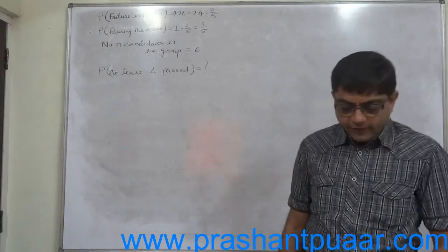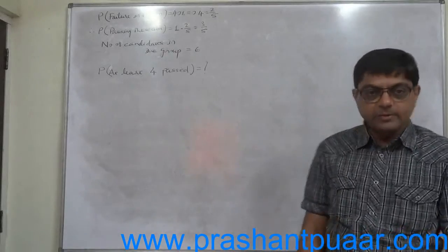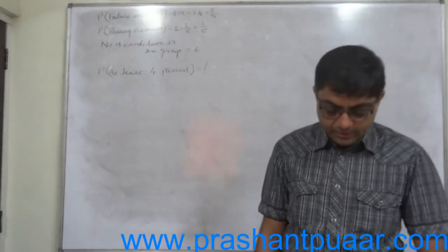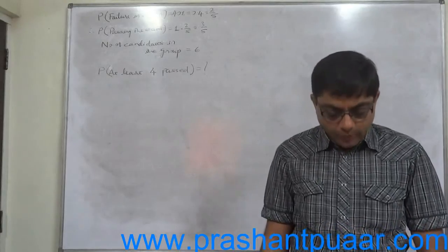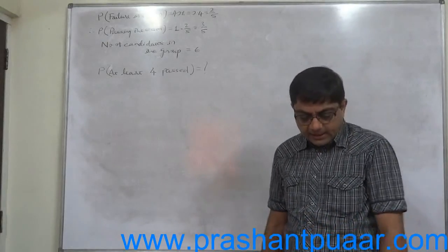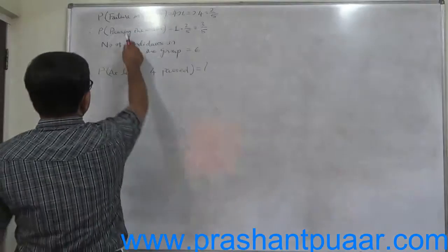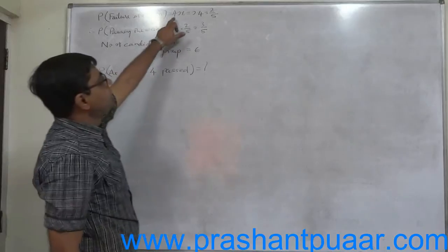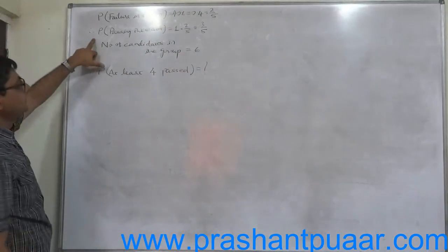The average percentage of failures in a certain exam is 40%. That means 40% of candidates fail in the examination. What is the probability that in a group of six candidates at least four passed in the examination? Probability of failure in the exam is given to be 40%, generally 0.4 or 2 by 5.